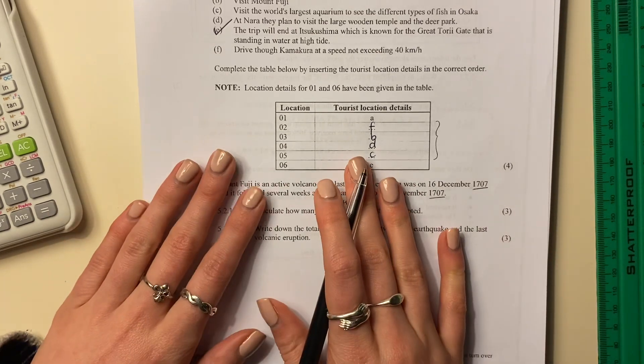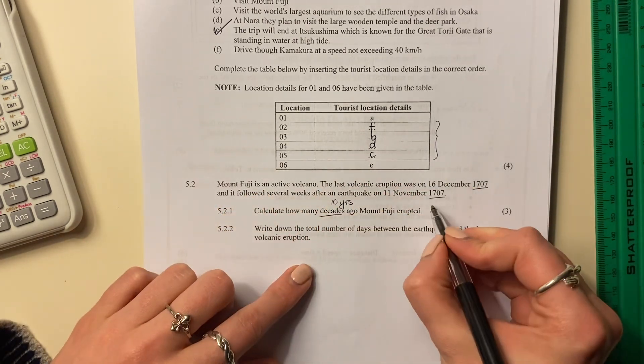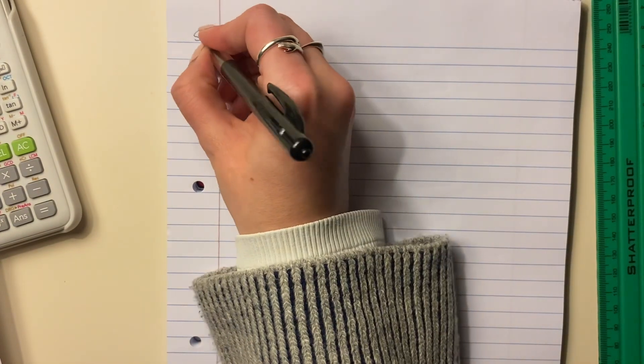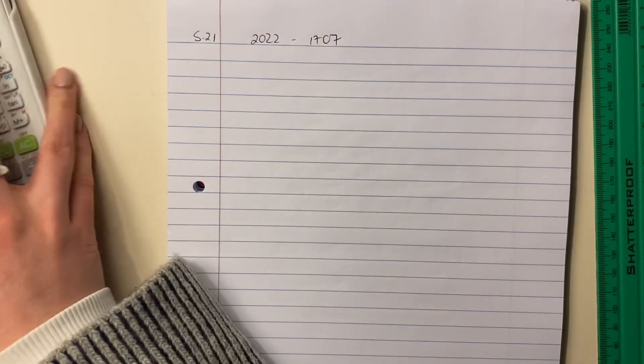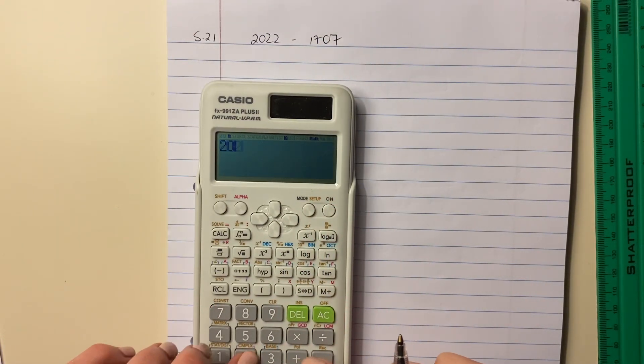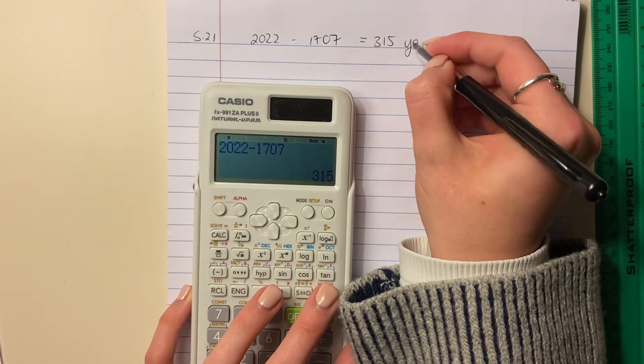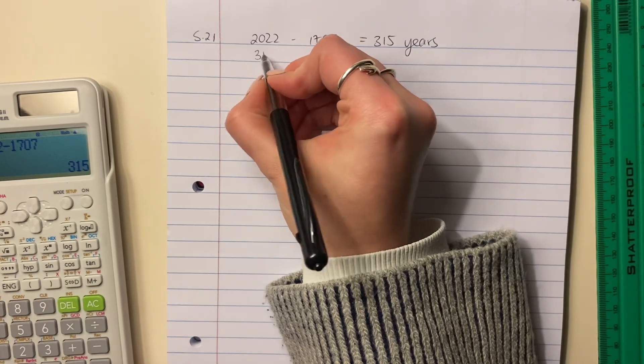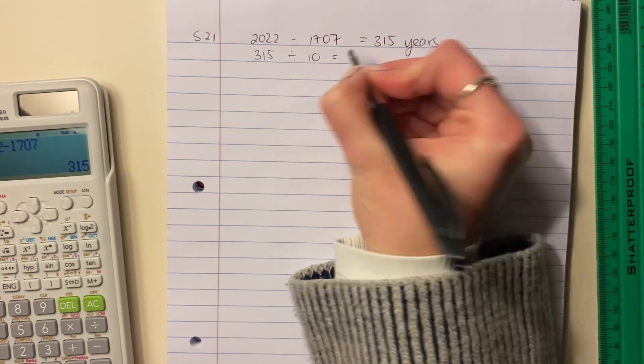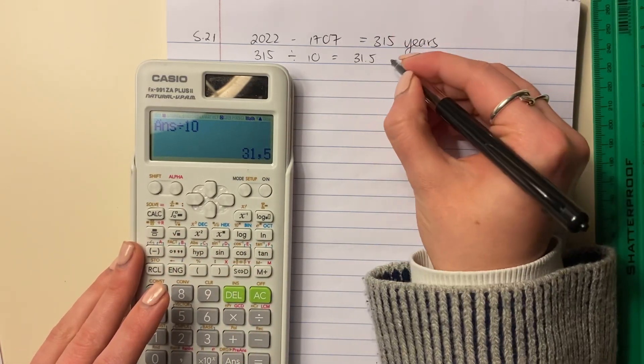Now, this paper that we're doing now was written in 2022, not in 2023, even though that's when I'm filming. So we're going to compare this to 2022. So we're going to start by saying 5.2.1, 2022 minus 1707. Okay, and let's put that in there. 2022 minus 1707, and that is 315 years. But it wants us to know this amount in decades. This is not in decades. We need to divide this by 10, right, do that on your calculator, and that will give us the number of decades.